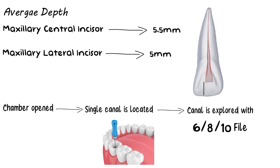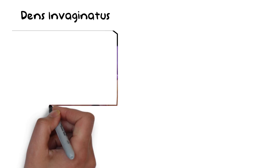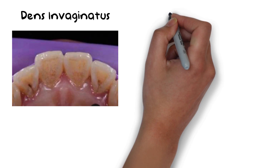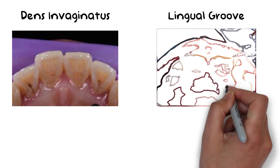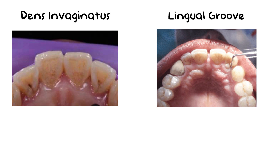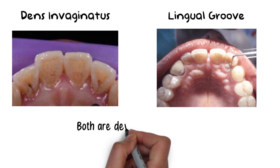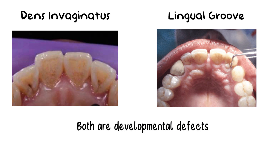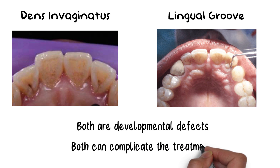Finally, some important anomalies worth mentioning are dens invaginatus and a prominent lingual groove. Dens invaginatus is a developmental defect commonly found in the maxillary lateral incisor that results in pulpal necrosis. Additionally, a lingual groove may also be found in the maxillary lateral incisor, as evident by a narrow probing defect. These developmental defects can complicate treatment and affect the prognosis.